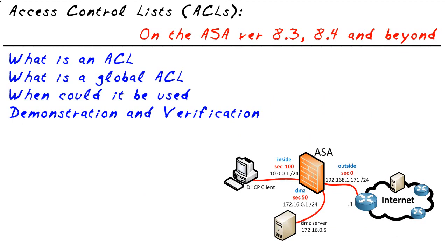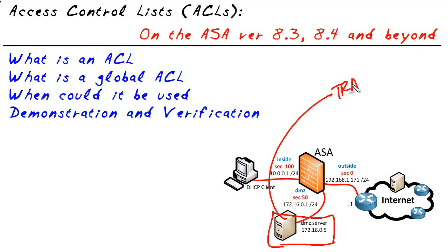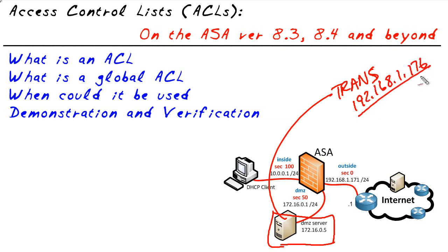Let's set the stage of what we're going to do. Let's say we have a DMZ server right here, and it's running with this IP address. To allow access from the Internet to this device, we're going to do a couple things. Number one, we have to have a translation, a mapped address. The address we're going to use in this example is 192.168.1.176 — and we'll just pretend that that's a globally routable address.